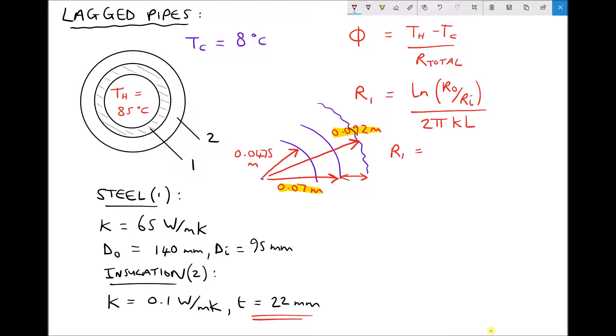So now we can start plugging in our values. R1 then is natural log R0. Well we've said that R0 for the steel is 0.07 over Ri for the steel is 0.0475. And we're dividing that by 2π times the thermal conductivity of 65. And as we said previously, we're doing this per meter of length, so times 1.